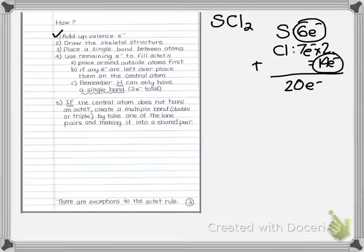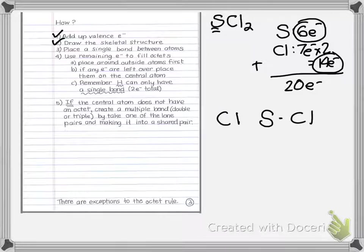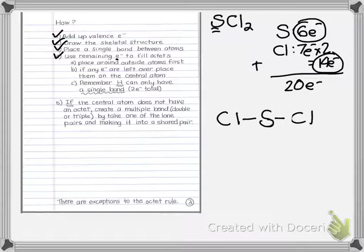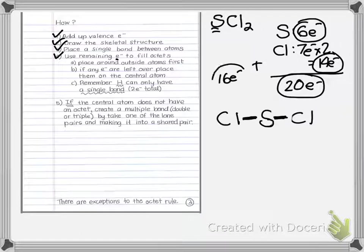Step two: draw the skeletal structure. Sulfur goes in the middle since it's listed first, and then the two chlorines on either side. Step three: place a single bond between each atom. That uses four electrons, leaving 16 remaining. Step four says to use remaining electrons to fill the octets, so start with the outside atoms.